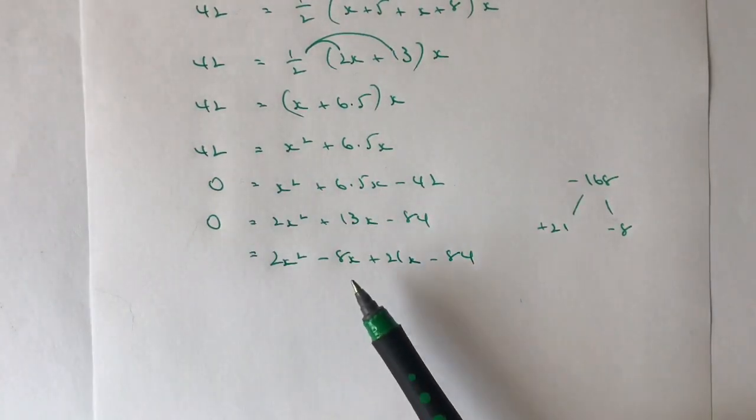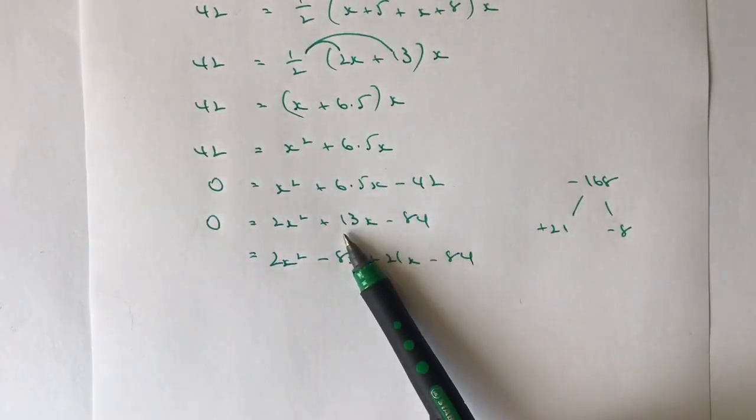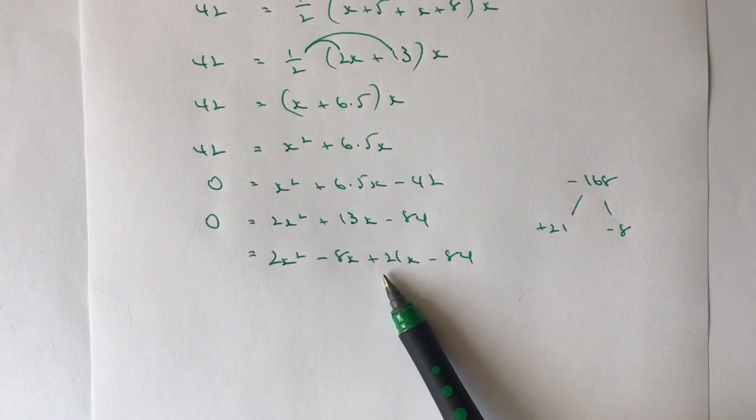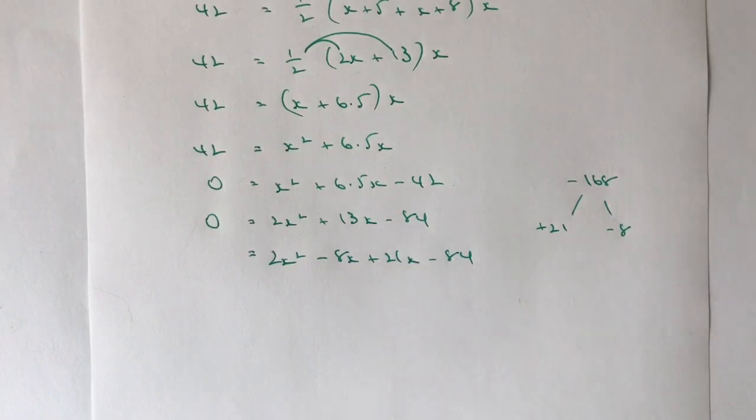Now, this bit in the middle will make plus 13. So I haven't actually changed anything. But this particular method allows me then to factorize the first two terms and factorize the second two terms. And hopefully I should come up with a common factor.